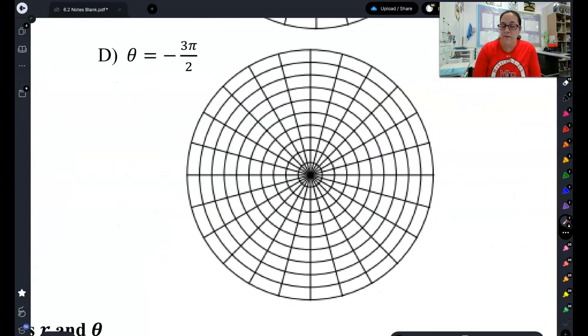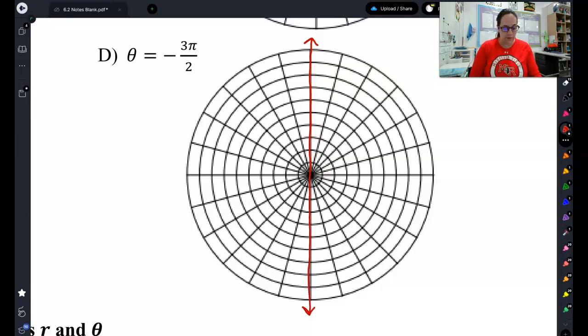Now what about if theta is negative? Well, let's figure out first off where negative 3 pi halves is. Remember, if we are negative, then we're going clockwise. So clockwise 1 pi half, clockwise 2 pi halves, clockwise 3 pi halves. So right there would be negative 3 pi halves. This would be if I had a positive radius. If I have a negative radius, it would go across the circle. So that would be the graph of theta equals negative 3 pi halves.